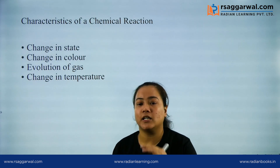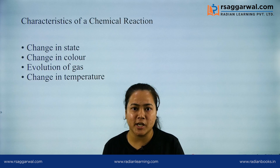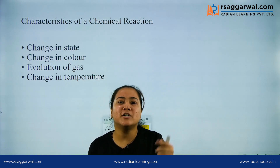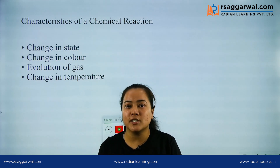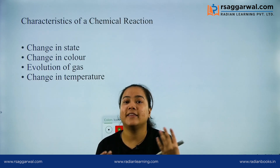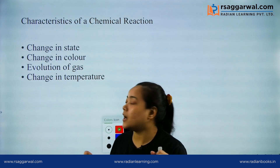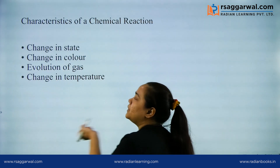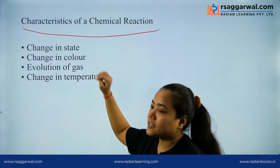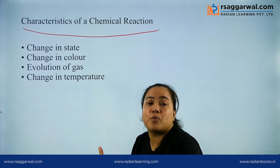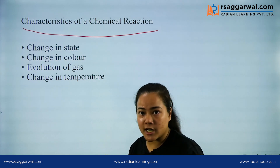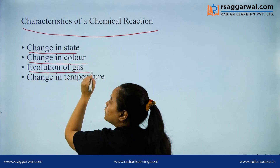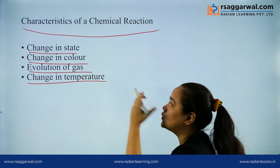Now, we have seen various examples of chemical reactions, but how do we know that a reaction is a chemical reaction? How are we deciding that a given reaction is a chemical reaction? This can be done by seeing some characteristics — some properties of a chemical reaction. By going through these properties, we can judge whether a given reaction is a chemical reaction or not. The characteristics are: change in state, change in color, evolution of a gas, and change in temperature. We are going to discuss each one by one.